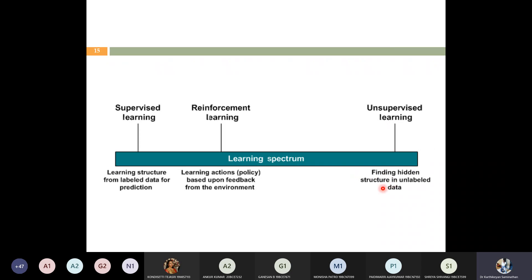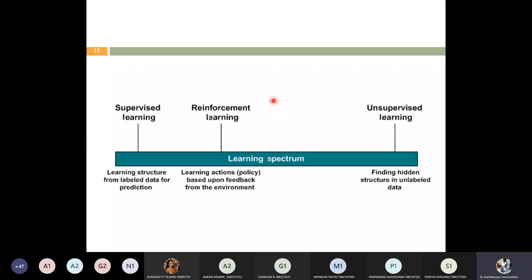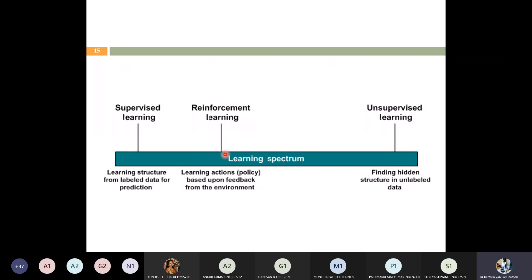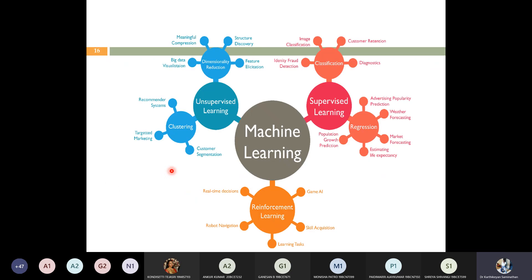In unsupervised learning, we don't have any labels. By seeing an image you cannot say if it is a dog or an animal — from observation you note down the hidden attributes of the image and train the model. From those observations you can come to a prediction. The third type is reinforcement learning — learning actions are based on feedback from the environment. For each category, there are different types of algorithms, which we will see one by one in upcoming classes.